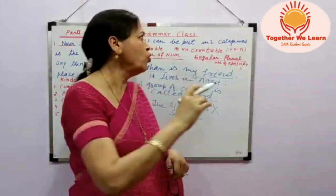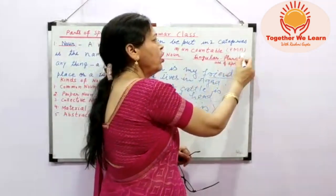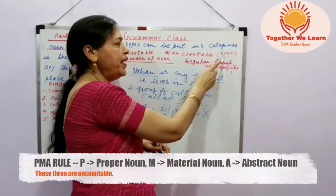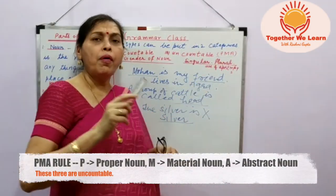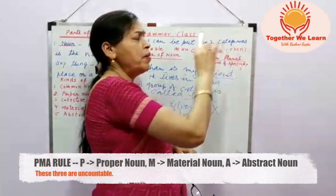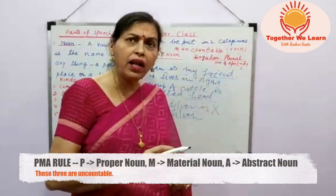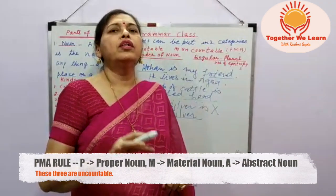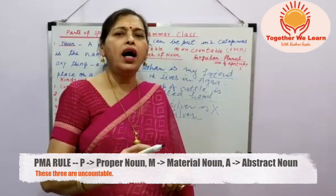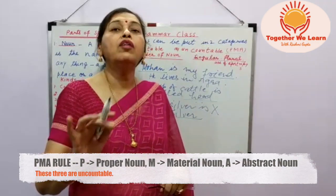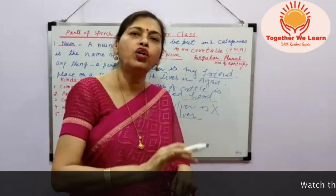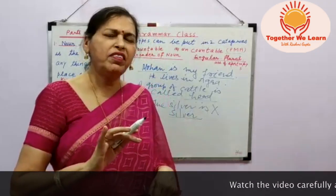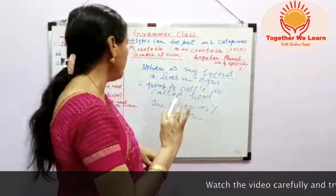So this is the rule I have told you — P, M, A: P is proper noun, M is material noun, A is abstract noun. These three are uncountable — we cannot count these things. So please keep these things in your mind.